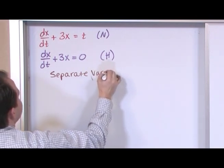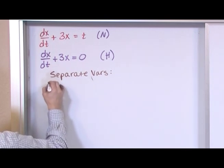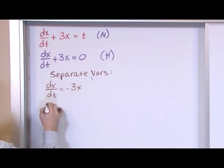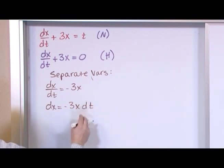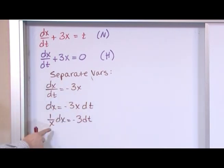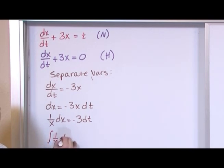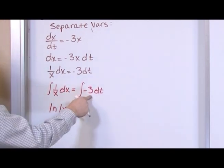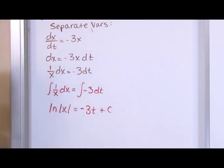Let's separate variables. Let's move the 3x over: dx/dt is equal to negative 3x. Move the dt over: dx is equal to negative 3x dt. Move the x back: 1/x dx is equal to negative 3 dt. You're going to see this a lot because when you separate variables, you're almost always going to have a 1/x here. So we integrate both sides: integral of 1/x dx equals the integral of negative 3 dt. The integral of 1/x is the natural log of x. The integral on the right is negative 3t plus some constant c.